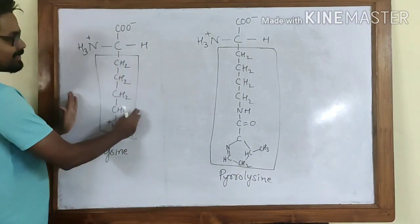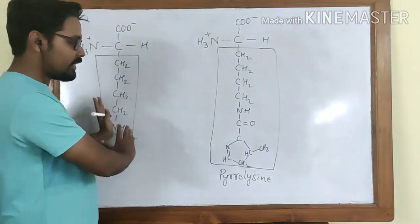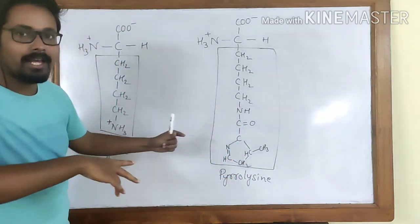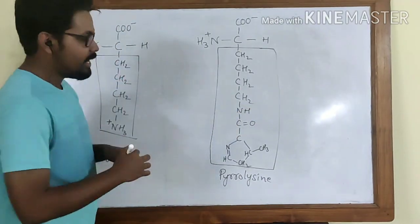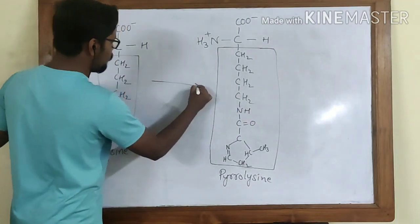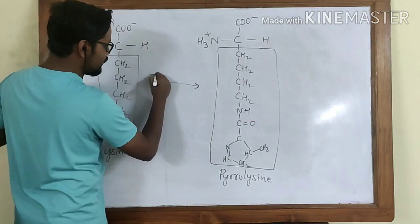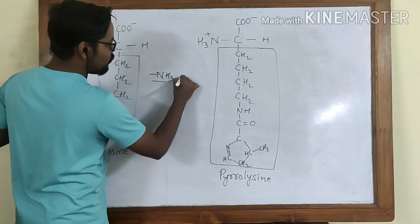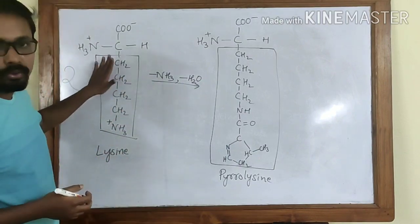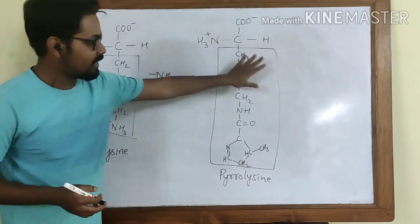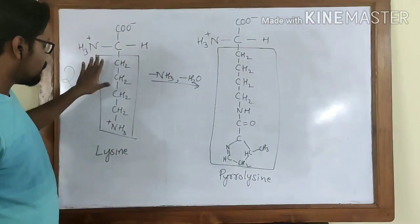Lysine gives rise to pyrrolysine — it is not like the selenocysteine and cysteine case. Here lysine gives rise to pyrrolysine. We actually need two lysines to react together to give rise to one pyrrolysine. In the process it loses one NH3 group and also one H2O group. After losing these two groups they give rise to one pyrrolysine. That is how pyrrolysine is formed from lysine.